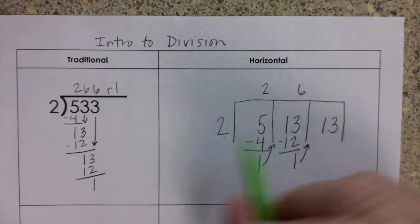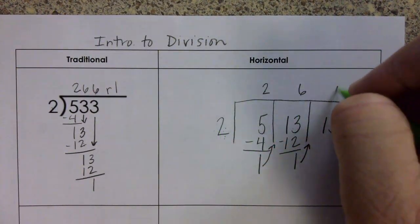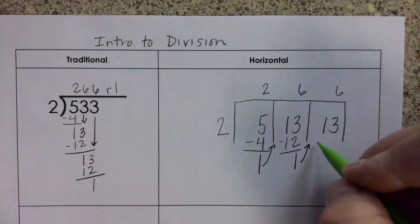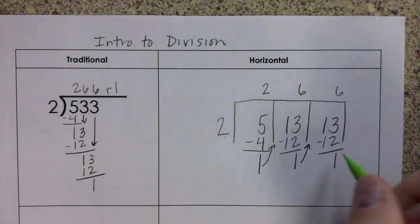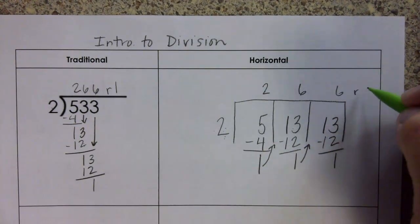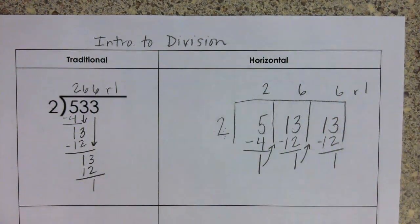2 can go into 13 6 times again. 6 times 2 is 12. Again, we're going to subtract. This is our remainder. 266 with the remainder of 1.